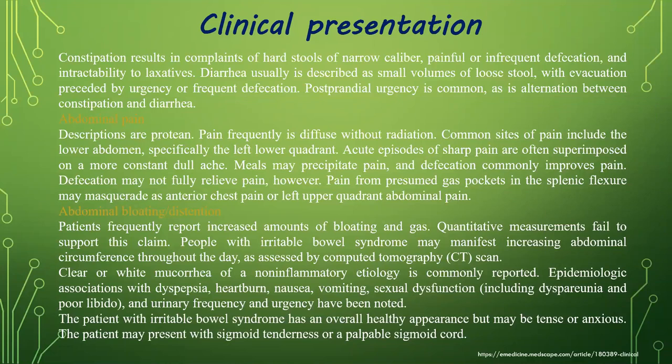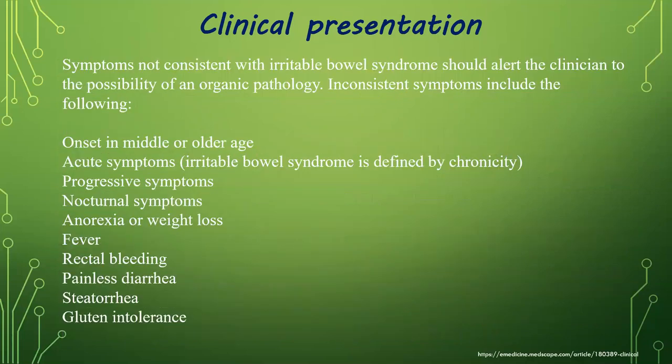Clear or white mucus of a non-inflammatory etiology is commonly reported. Epidemiological associations with dyspepsia, heartburn, nausea, vomiting, sexual dysfunction, and urinary frequency and urgency have been noted. The patient with irritable bowel syndrome has an overall healthy appearance but may be tense or anxious, and may present with sigmoid tenderness or a palpable sigmoid cord.